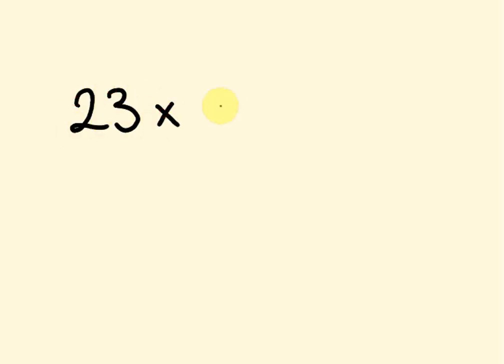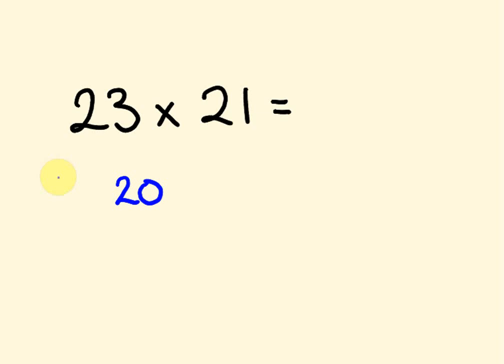I'll give you an example of what we've been looking at so far. Say we're multiplying 23 times 21. The links for the other videos I'll put up now in case you want to go back and look at them. The way we were doing this is we look at a third number — in this case the number 20 — to make our multiplication simpler. 20 is a lot easier to multiply with than either 23 or 21.